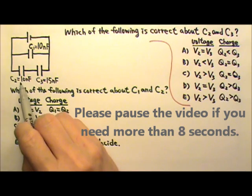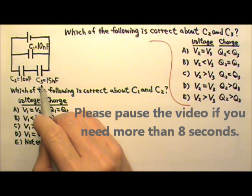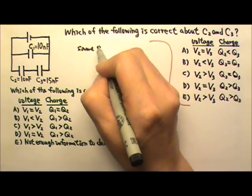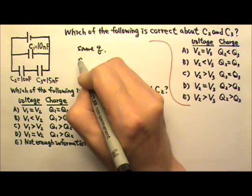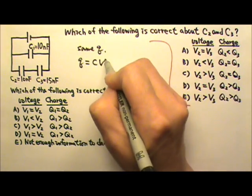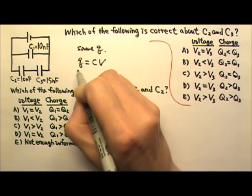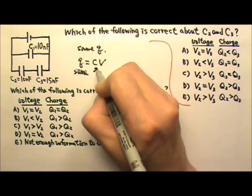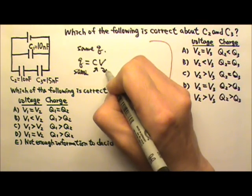C2 and C3, they are in series. So they have the same charge. And Q equals Cv. Because they have the same charge, that means the one with the larger capacitance must get lower voltage.